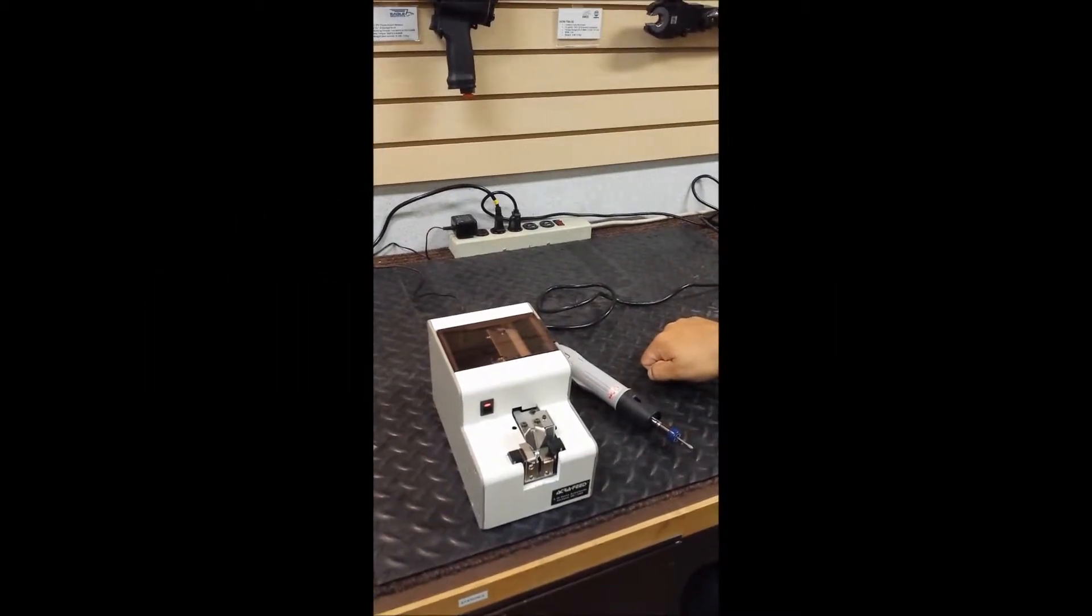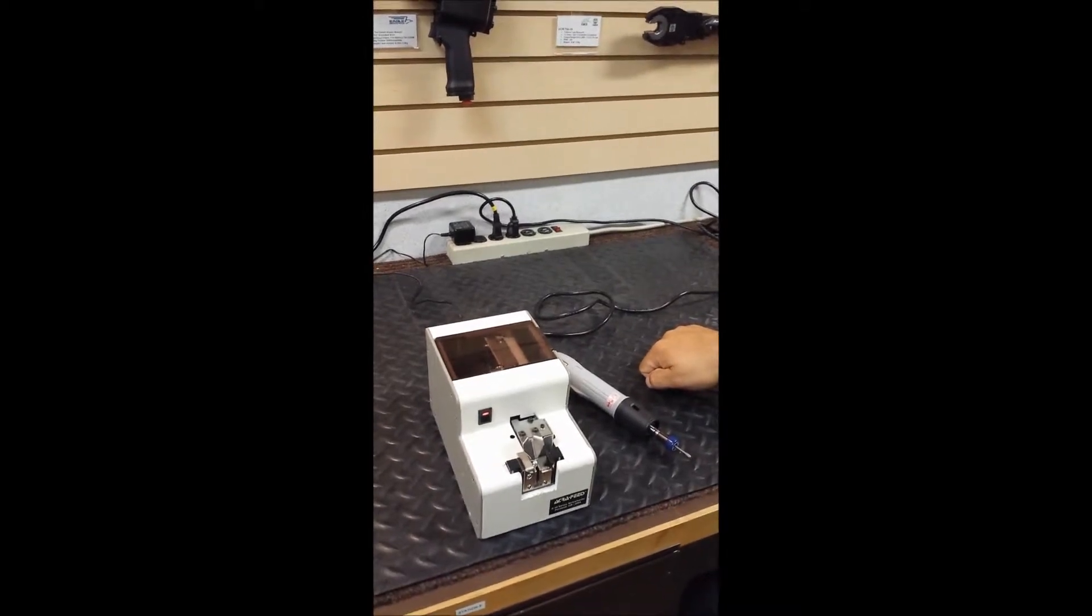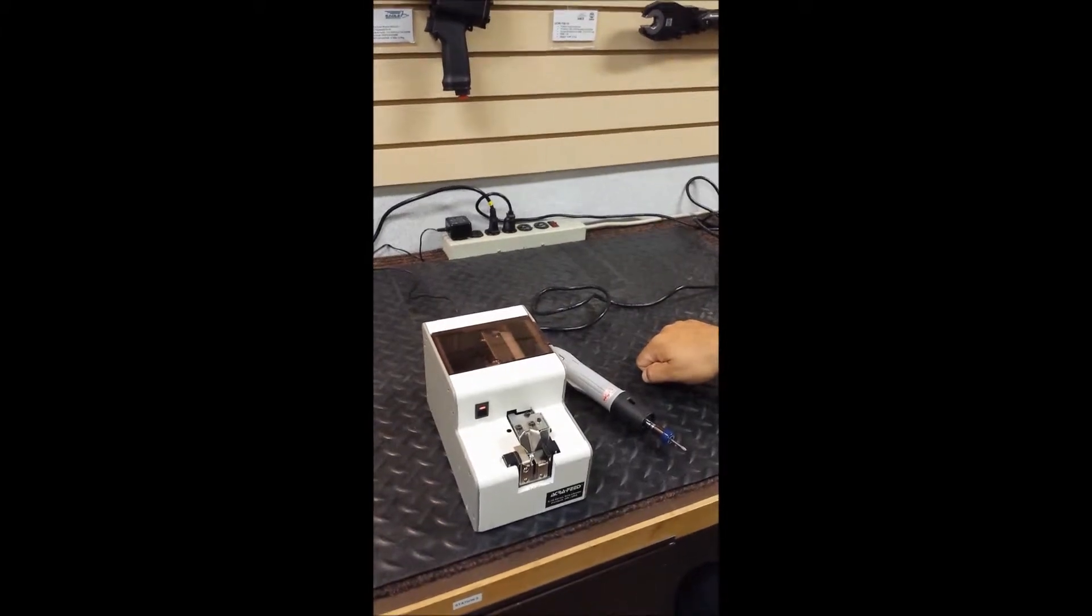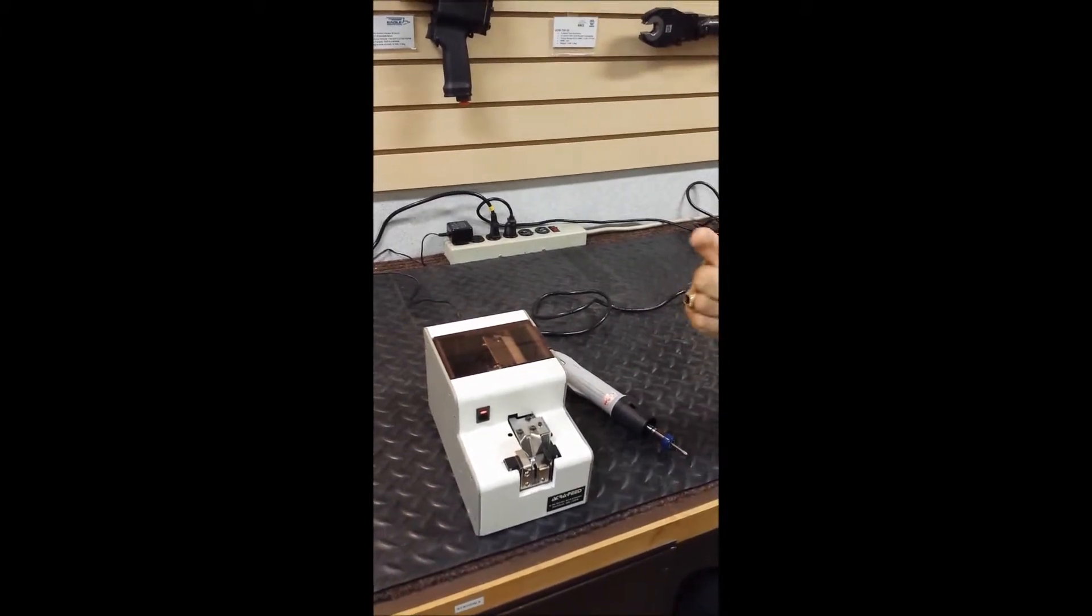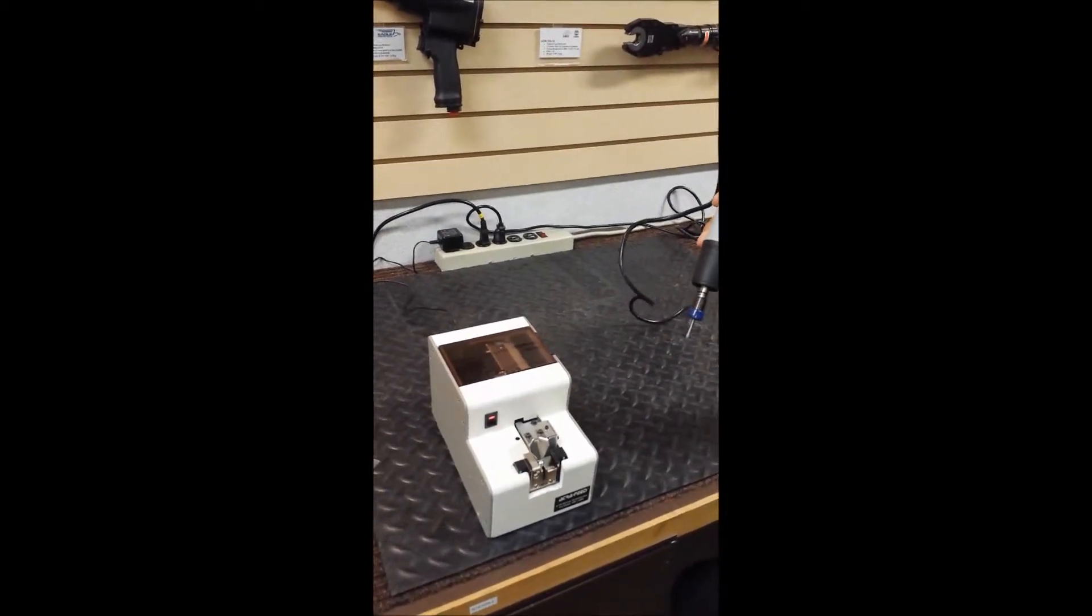What we have in front of us today is an Acrofeed A50 series automatic screw presenting machine. This machine is designed to eliminate the need for a worker to handle fasteners by hand and get them onto the end of a screw driving device, whether it be electric or pneumatic.